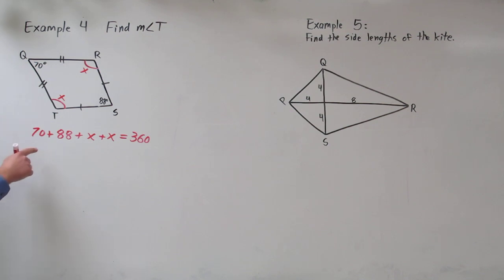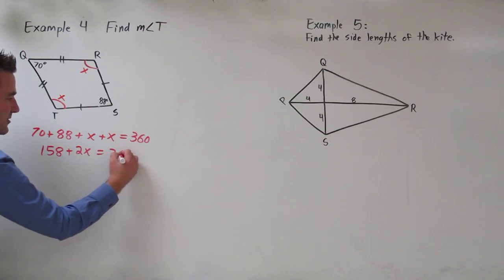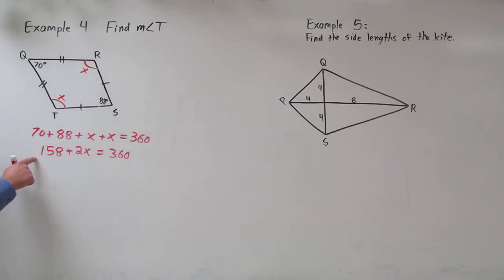When we combine like terms, we get 158 plus 2x equals 360. Subtract 158 from both sides and we get 2x equals 202.